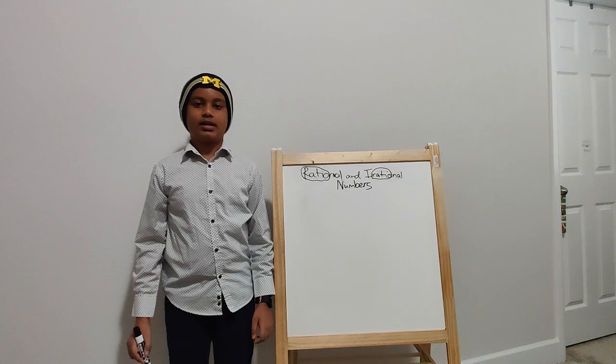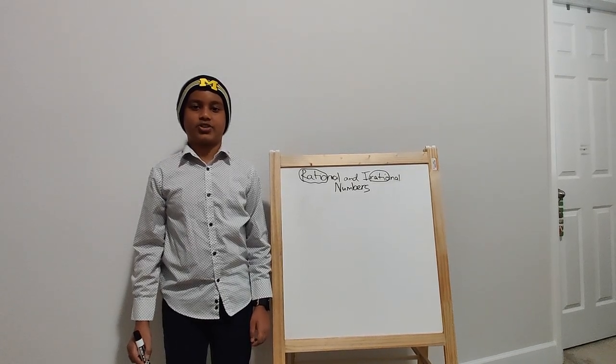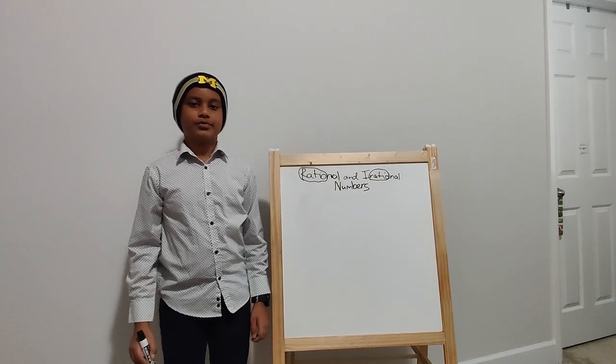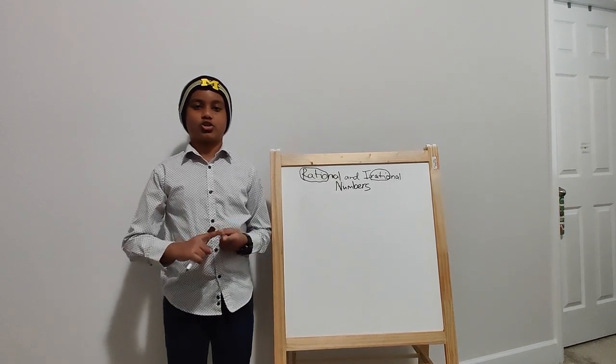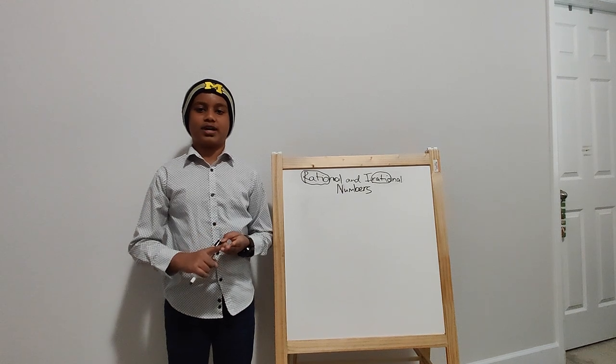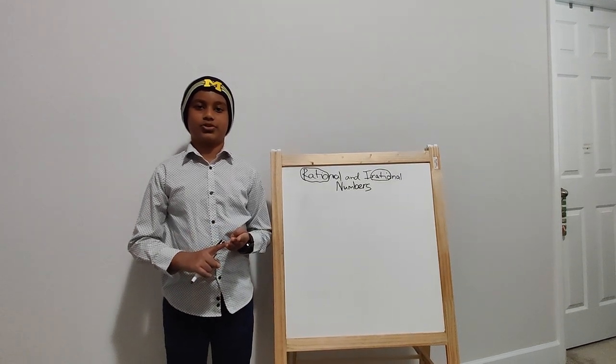Now, I am going to list some examples of rational and irrational numbers. What are some examples of rational numbers? They can be integers, whole numbers, simple fractions, and simple decimals.